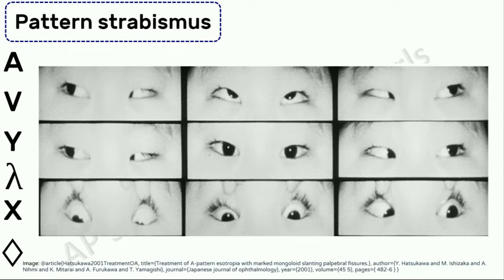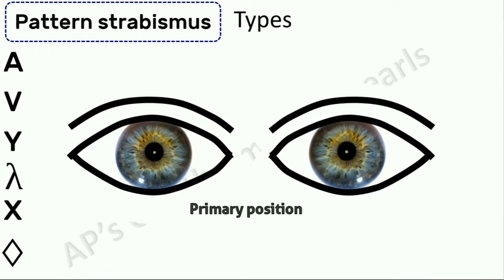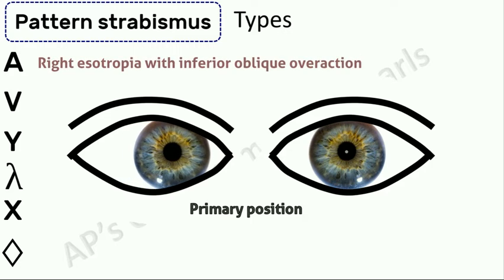Orbital anomalies can also cause pattern strabismus. A pattern esotropia is often associated with upward slanting palpebral apertures. Now let's see a case of right esotropia with inferior oblique overaction.